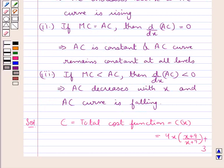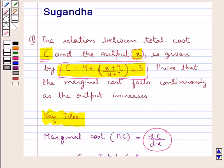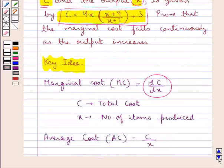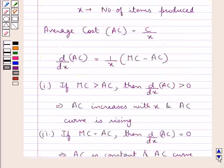As we are supposed to prove that the marginal cost falls continuously as the output increases, we need to show that d/dX of MC is less than 0.